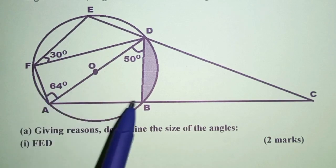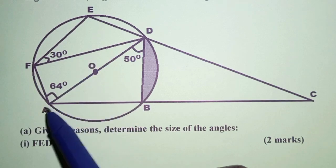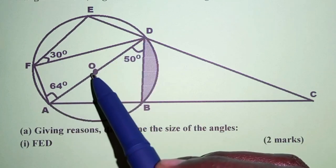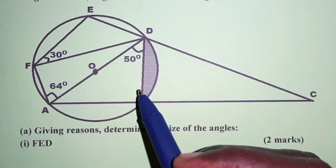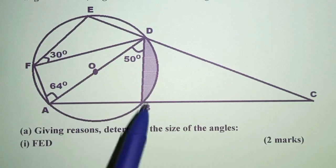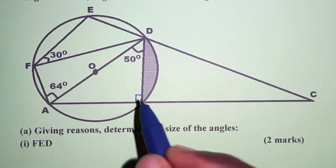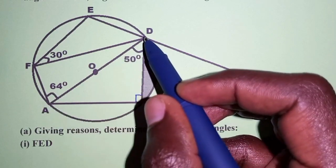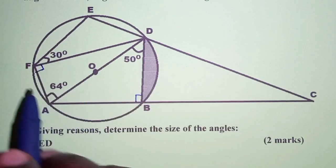We'll begin with these two angles — the angle at F and at B. Considering that AD is the diameter, it passes through the center O, so the diameter will always subtend angle 90 degrees at the circumference of the circle. That means at B we have 90 degrees, and the same AD subtends angle 90 at point F.